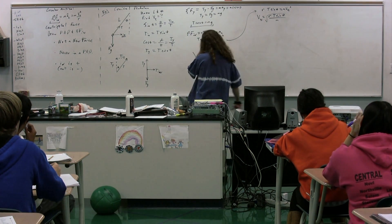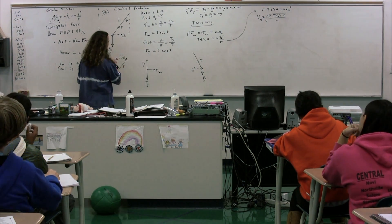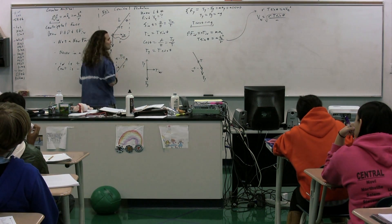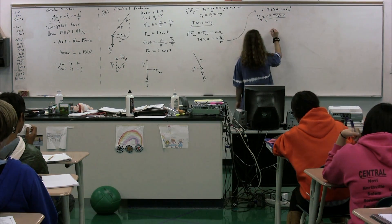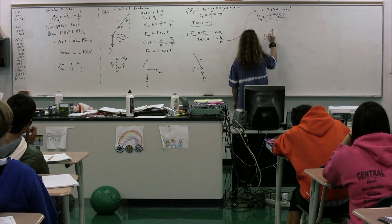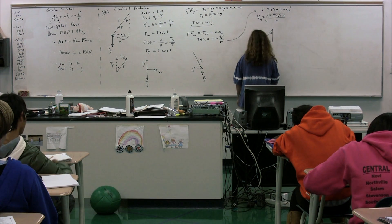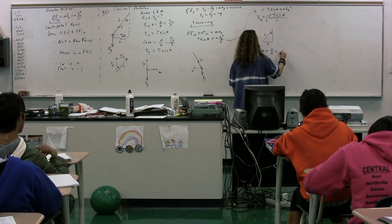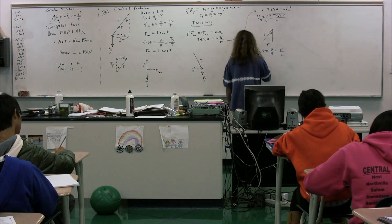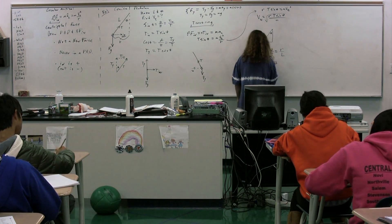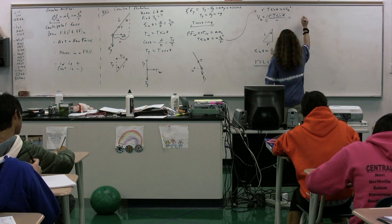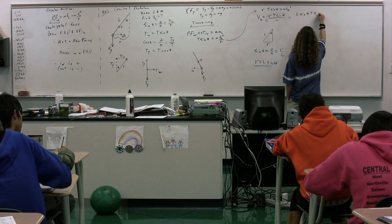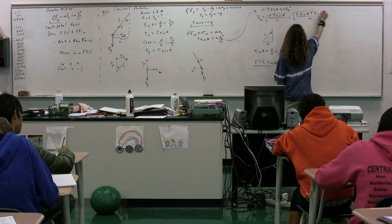We have an issue — the radius. The radius is this horizontal distance. We need to draw another picture and solve for that radius. We have the length L, angle theta, and radius. Therefore, the radius equals L times sine of theta. Substituting that in, the tangential velocity equals the square root of L times sine squared theta times tension divided by mass.